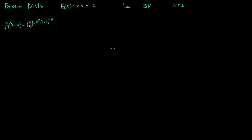Now the purpose of this is to find the probability. We know what lambda is but we want to find out what p is. So what we have is p is equal to lambda over n.